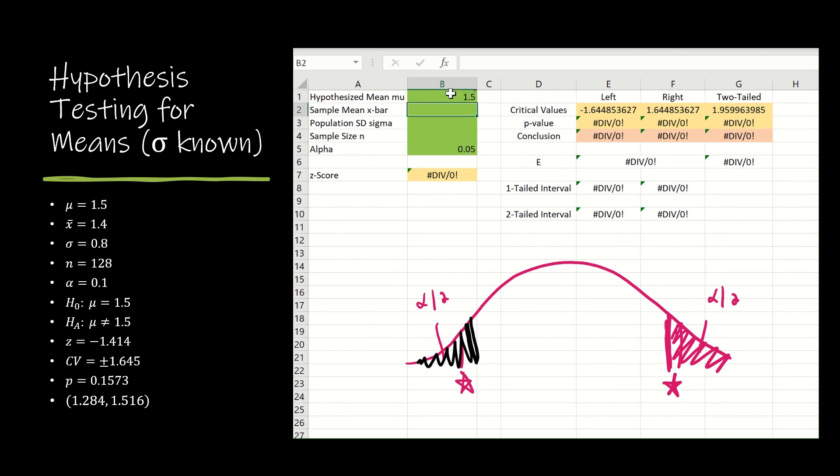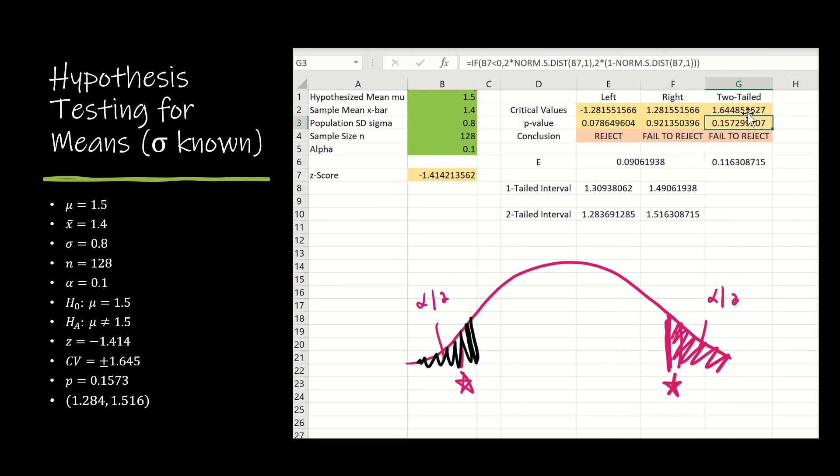So let's plug in everything we just found out and see if what I did works. 1.5 for mu, 1.4 for x-bar, 0.8, sample size 128, alpha was 0.1, and yes, this is the same z-score, my critical value was plus or minus 1.645, and notice I have an awesome p-value of 0.1573, which is what I found previously.